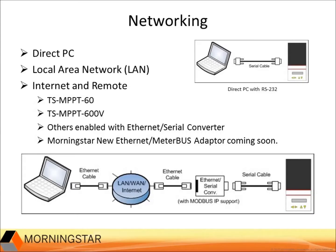Now we are going to look at the networking options. It is important to distinguish between the serial Modbus RTU options and the Ethernet TCP/IP options. You can make a direct connection to a PC over serial or Ethernet cable. However, a serial network is a Modbus RTU network, whereas an Ethernet local area network is a TCP/IP network.